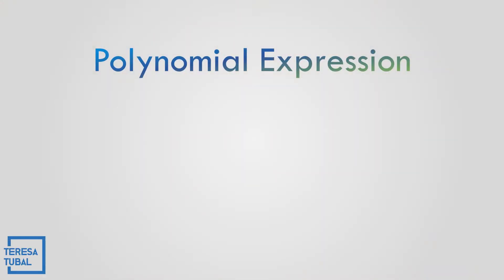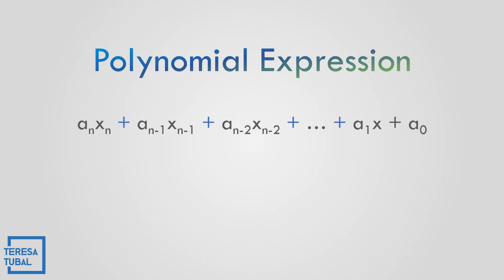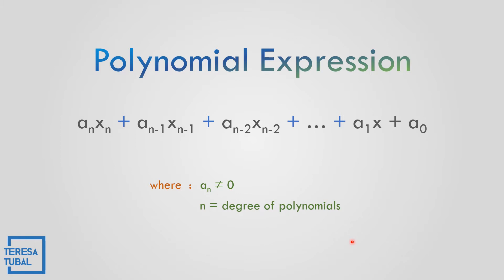What is a polynomial expression? As you can see, this is the polynomial expression where e sub n should not be equal to 0, and n is considered as the degree of polynomials. And x sub 0, x sub 1, and so on are real number coefficients.